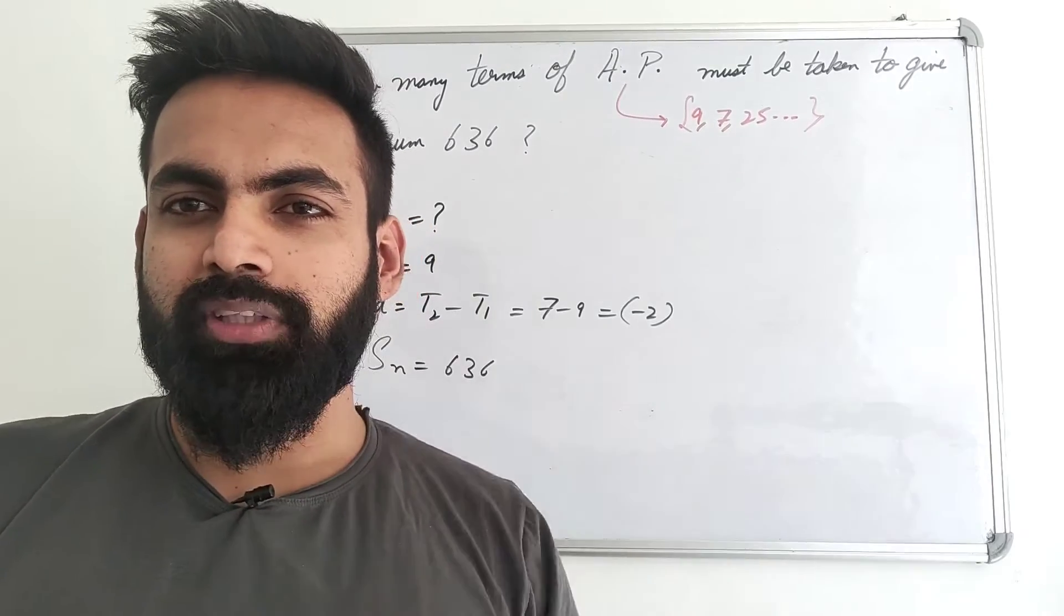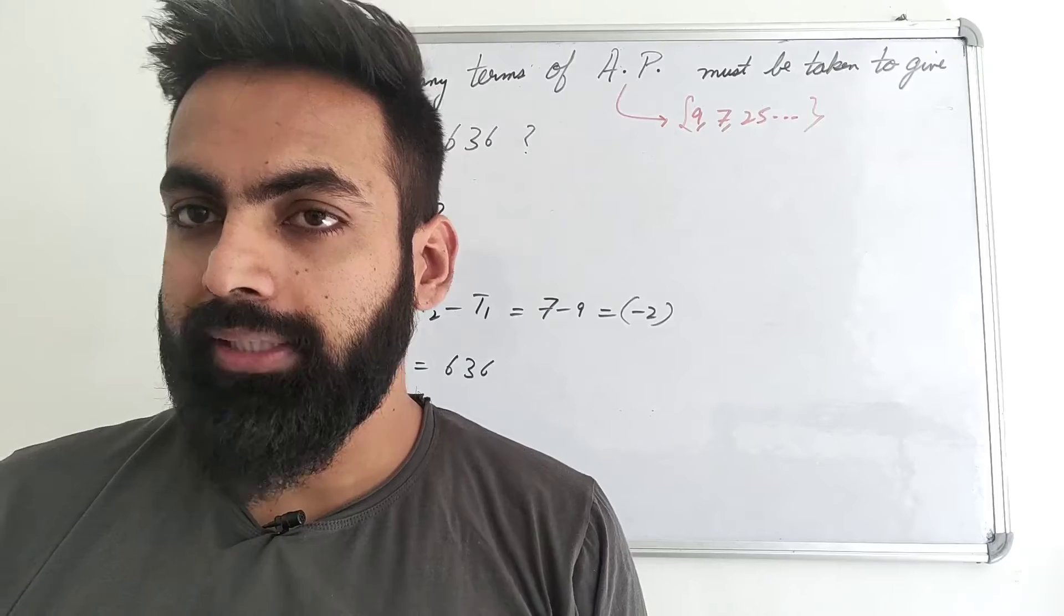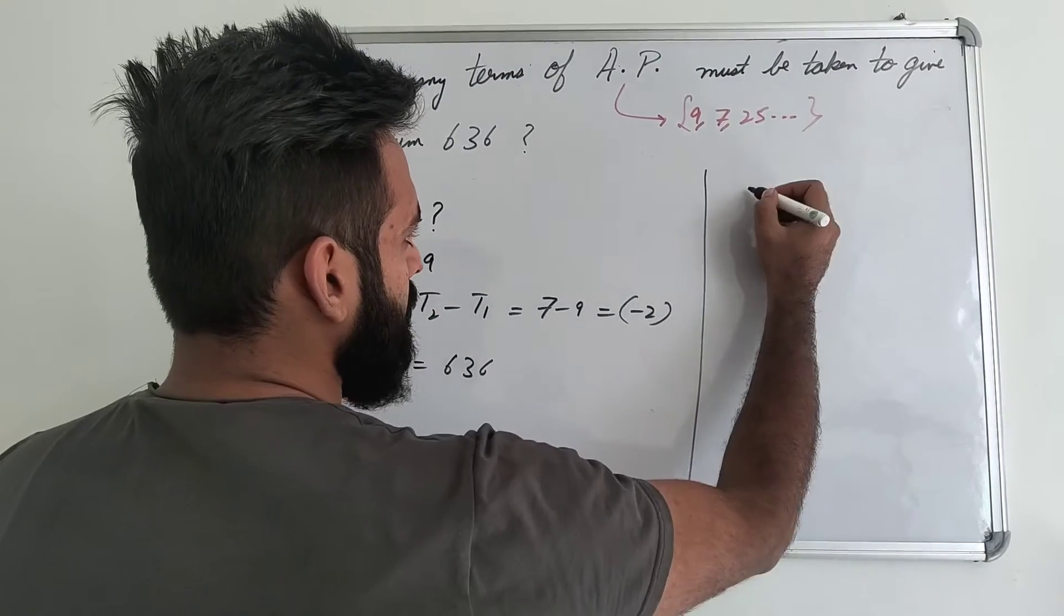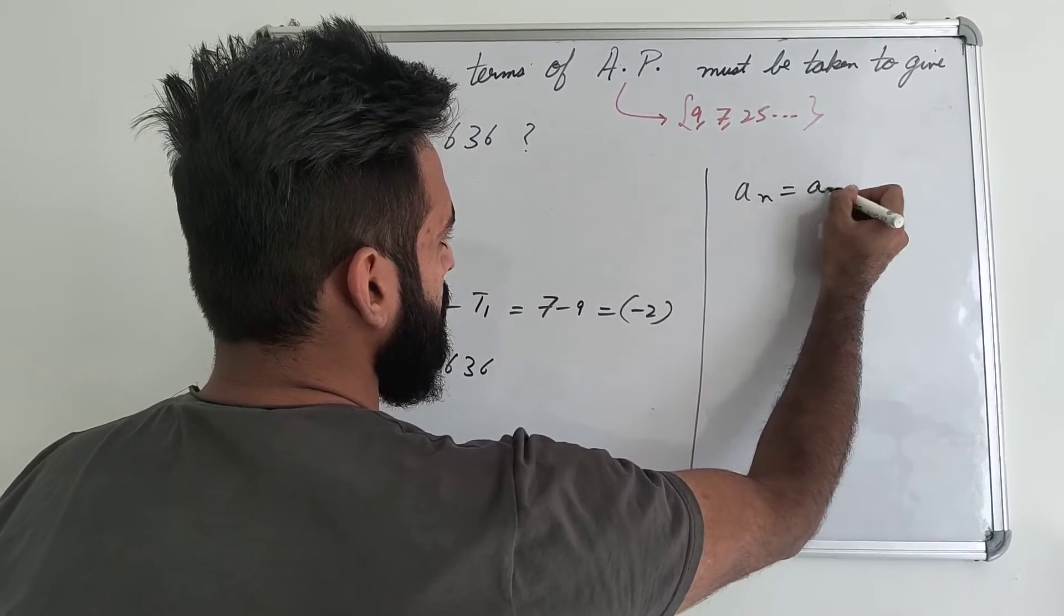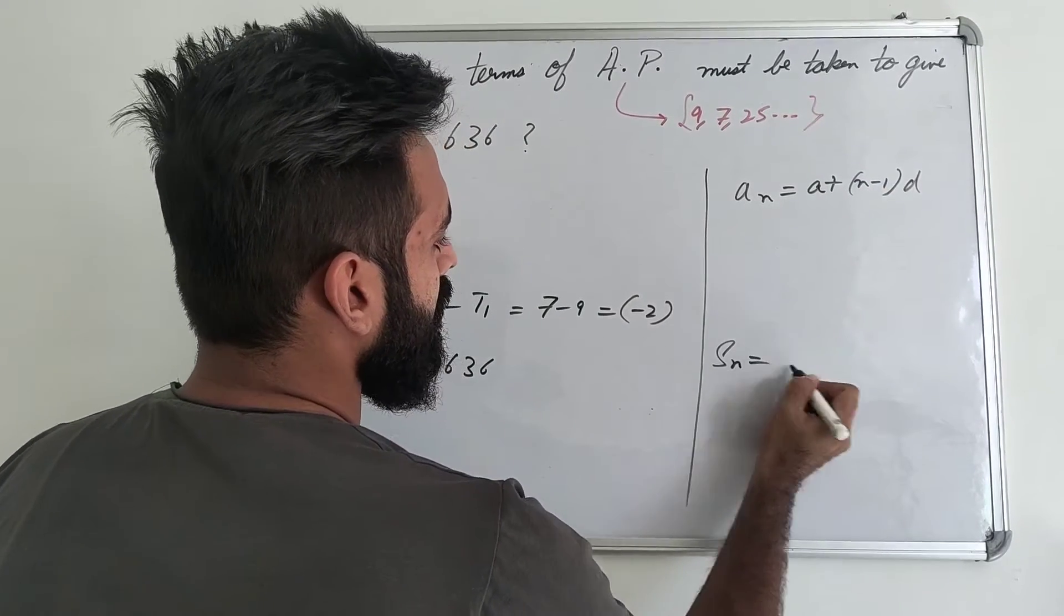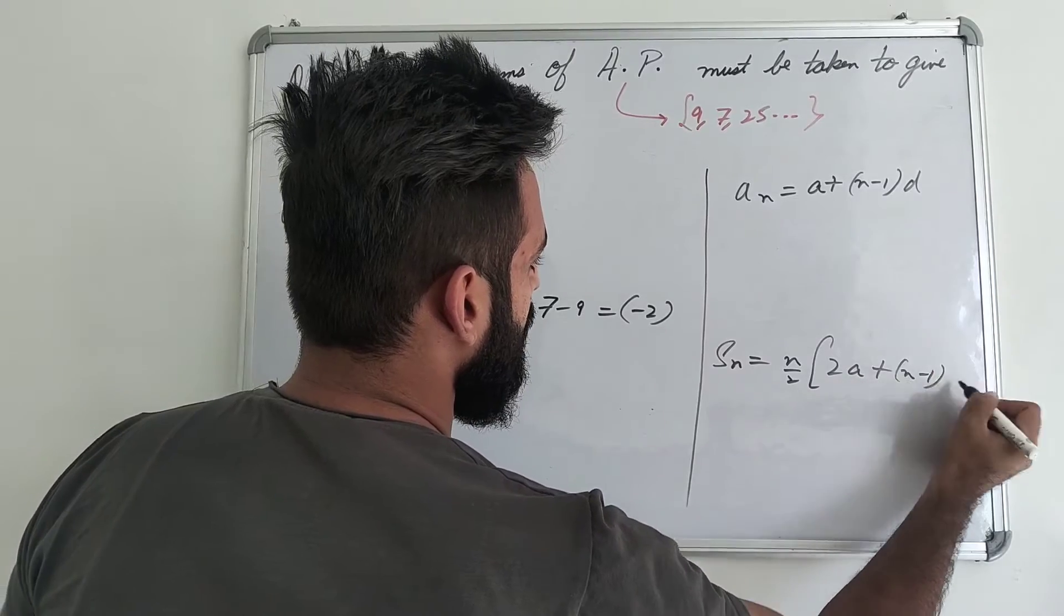Now, let's see in given things, you will remove N. First of all, you will write both formulae, like we have described in the previous video. One formula is AN, that is A plus N minus 1 into D. And one formula is SN, that is N by 2, 2A plus N minus 1 into D.